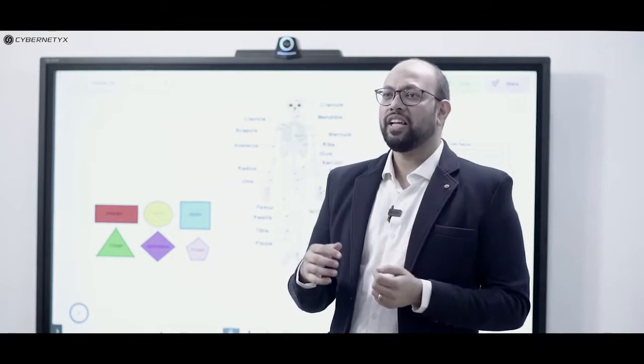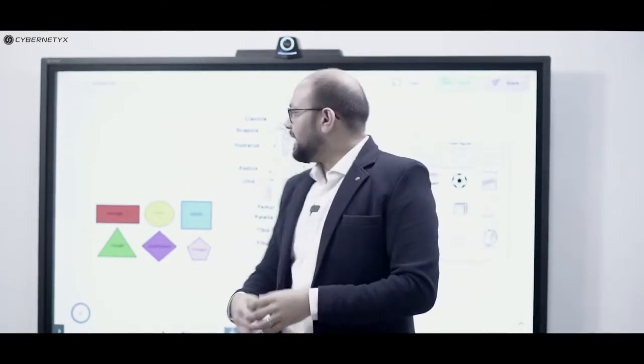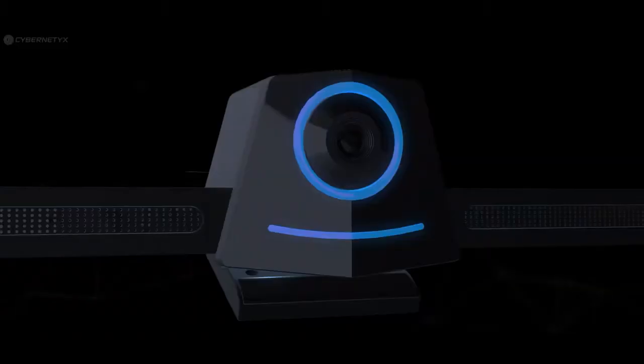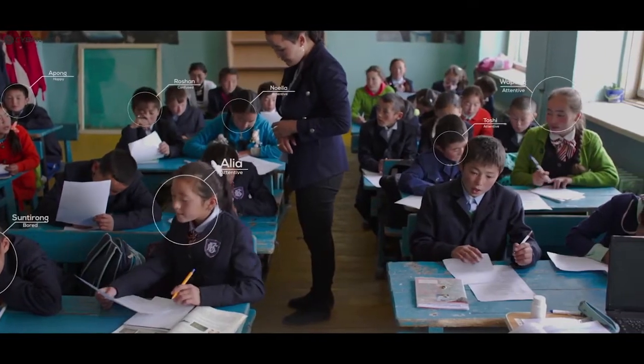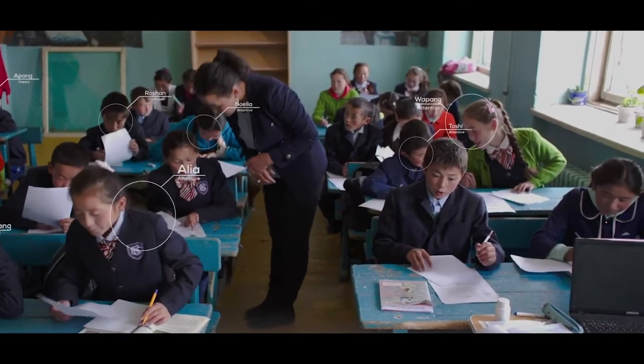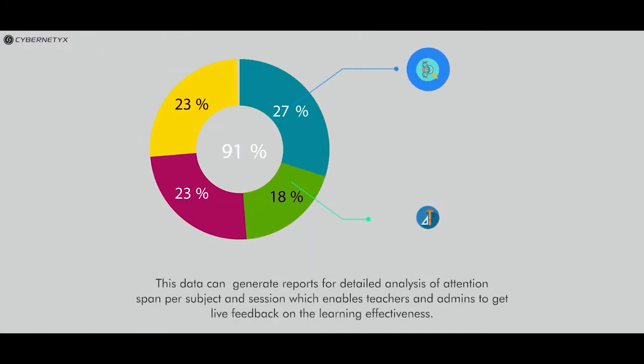The main distinguishing feature that makes Curiosity stand against other interactive panels in the industry is this ClassEQ camera. It has an ultra-wide lens that can cover students sitting in any part of the classroom. This ClassEQ camera actually captures the emotions and attentiveness of the students and generates a classroom behavior analytics report.